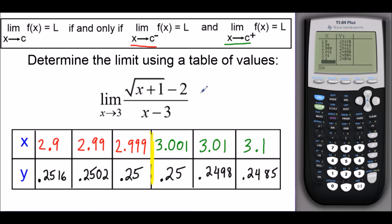So what this tells us, since our left and right limits are equal, our limit as x approaches 3 of the function is equal to 0.25.